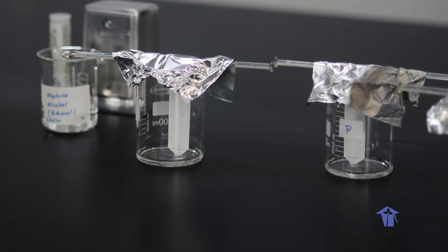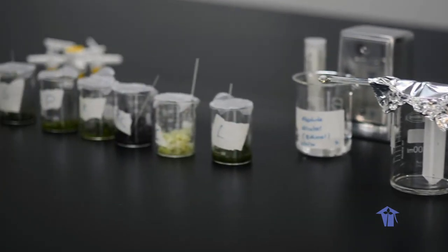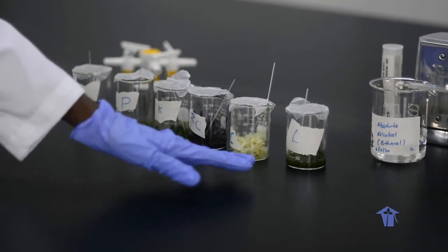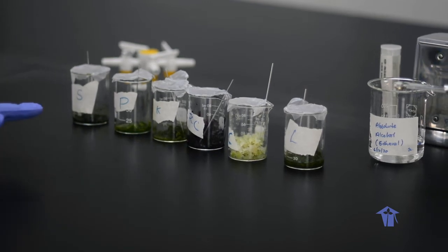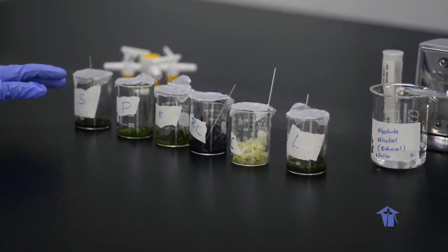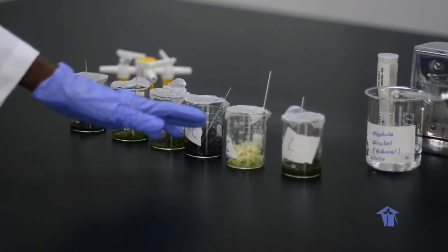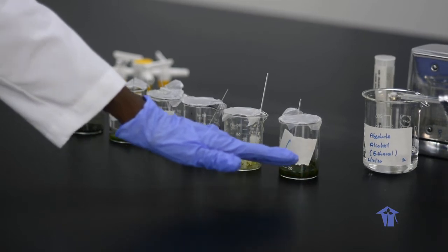We have come back to our chromatography experiment. Recall that we had used six different sources of plant pigments obtained from pak choy leaves, spinach leaves, kale, red cabbage, cabbage, and lettuce leaves.